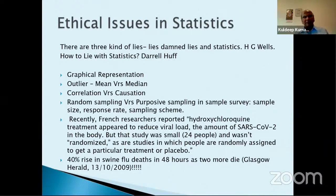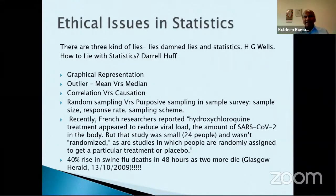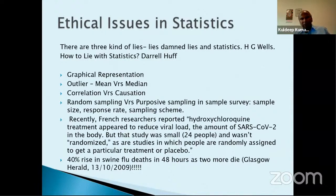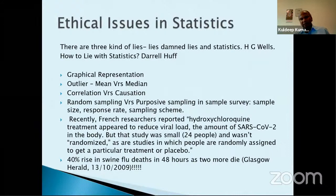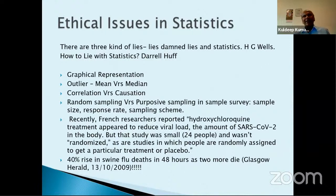Correlation versus causation is another problem. Quite often people calculate the correlation and relate it to causation — that is not true. Sampling is another problem; random sampling should be used. In the COVID context, French researchers reported that hydroxychloroquine appeared to reduce viral load of SARS-CoV-2. But that study was very small — only 24 people — and was not randomized. That study published in Lancet was essentially useless, yet people started buying chloroquine tablets and America imported 10 million doses.